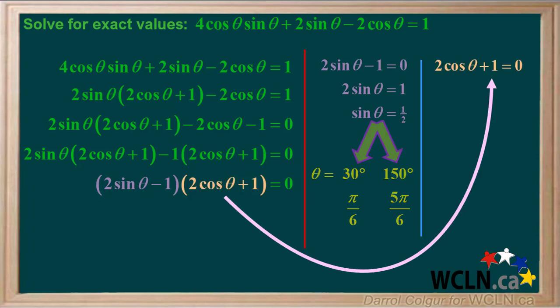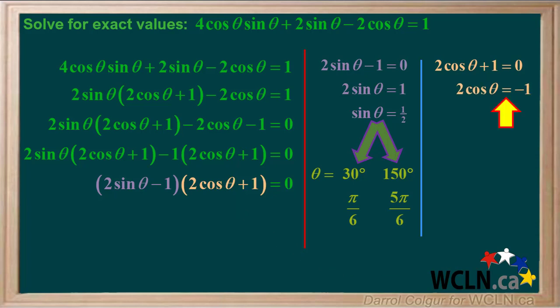Now we'll equate the second factor, 2 cos theta plus 1, to 0 and simplify it. Subtracting 1 from both sides gives us 2 cos theta equals negative 1, so cos theta equals negative 1 half.